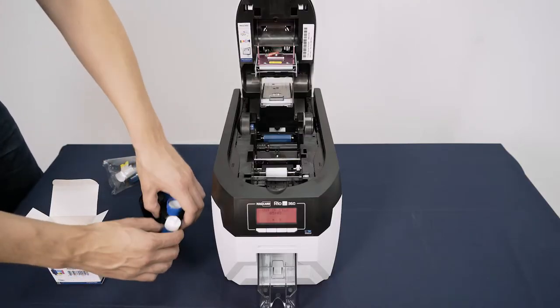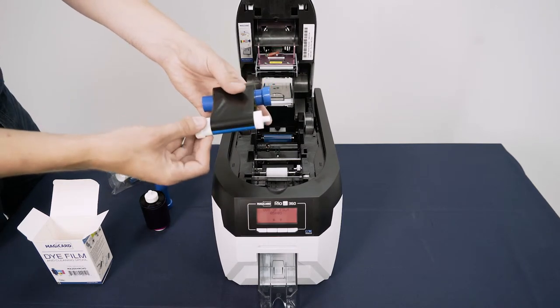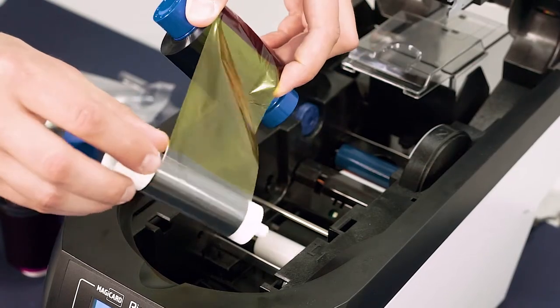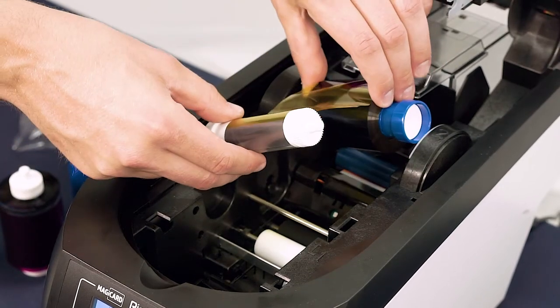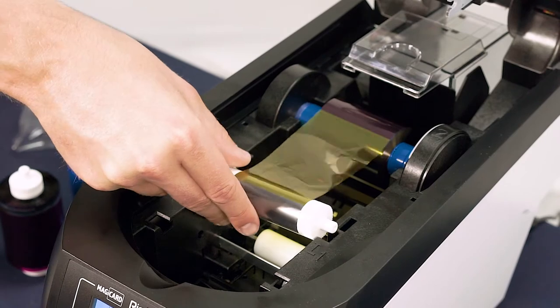Slot both spools of your new die film into place, making sure the blue spool is towards the back of the roller and the white towards the front, and that film is running across the top of both spools.